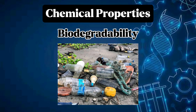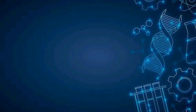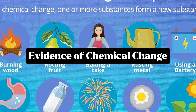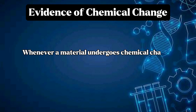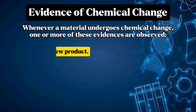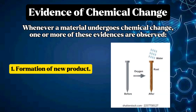Non-biodegradable materials take a much longer time to be fully decomposed, so these materials must be reused in another way. Whenever a material undergoes chemical change, one or more evidences are observed. First: formation of a new product — when a nail is exposed to oxygen and water, rust forms on its surface, and once rust is formed the original material is unidentifiable.